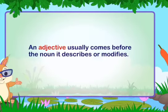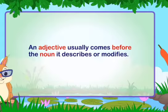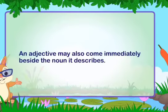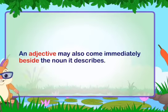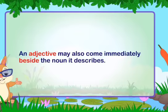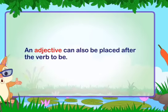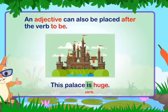An adjective usually comes before the noun it describes — for example, 'this is a huge palace.' An adjective may also come immediately after a linking verb beside the noun it describes — for example, 'the heat made the child sleepy.' An adjective can also be placed after the verb 'to be' — for example, 'this palace is huge.'